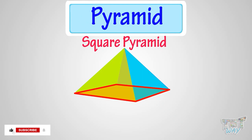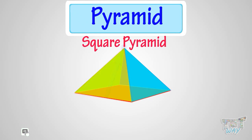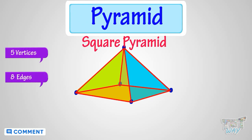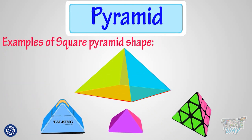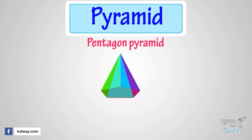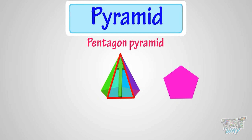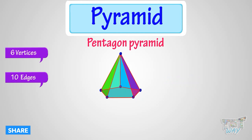This is a square pyramid because its base is a square and all other faces are triangle and converge to a single point. It has five vertices, eight edges, and five faces. Now this is a pentagon pyramid because its base is a pentagon and all other faces are triangle and converge to a single point. It has six vertices and ten edges.